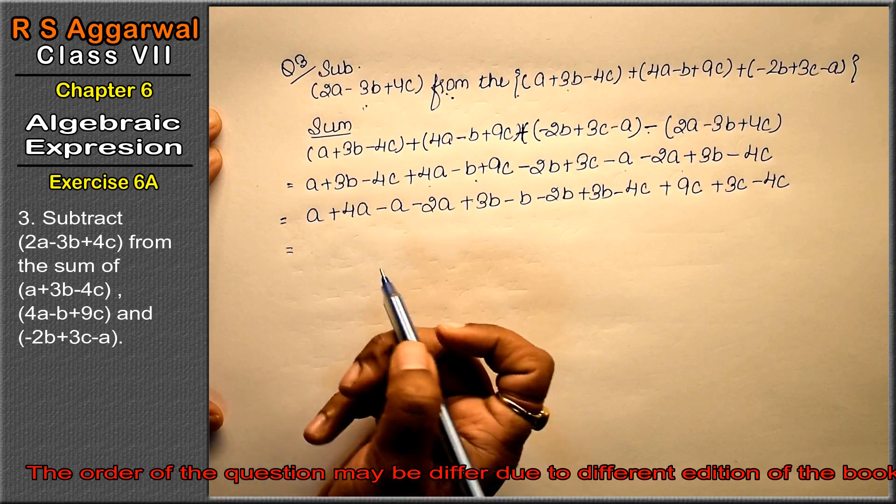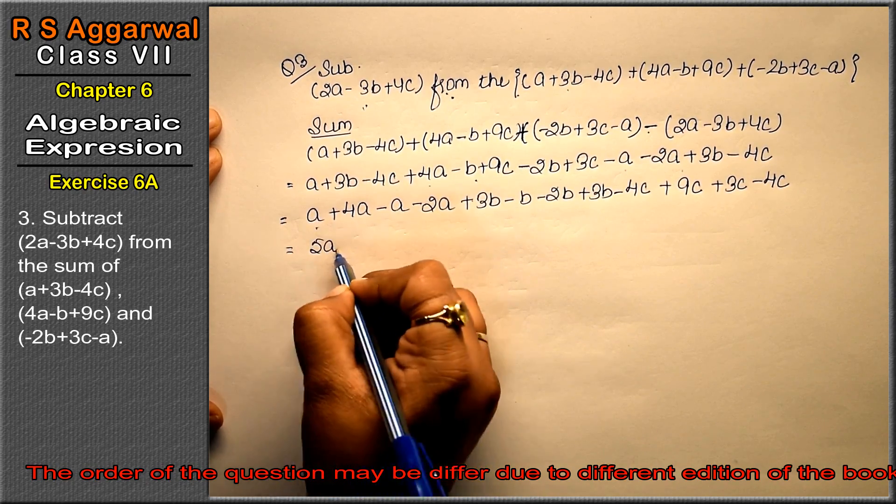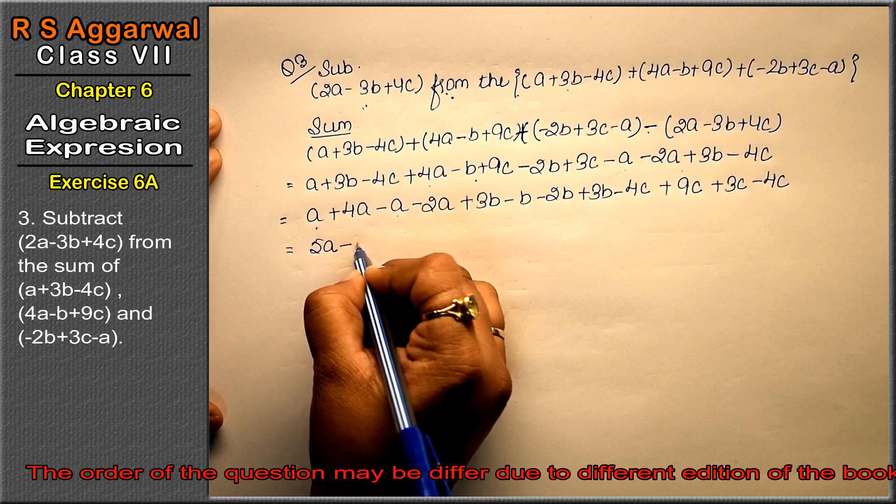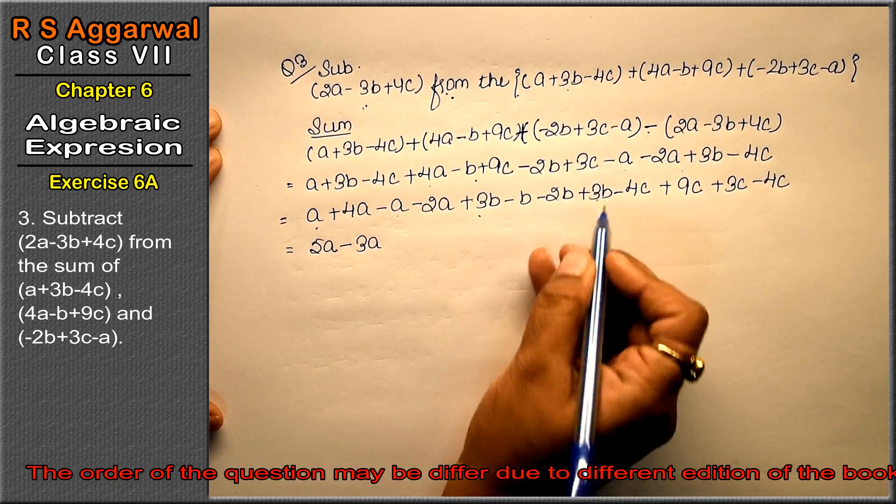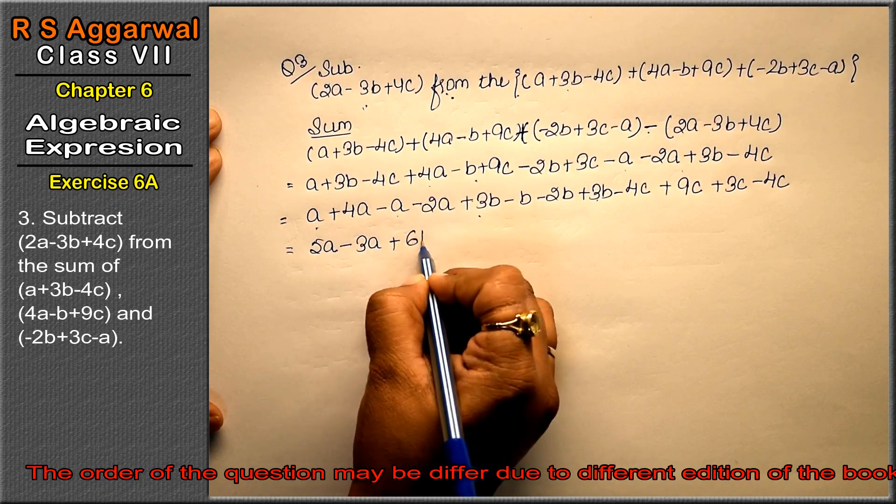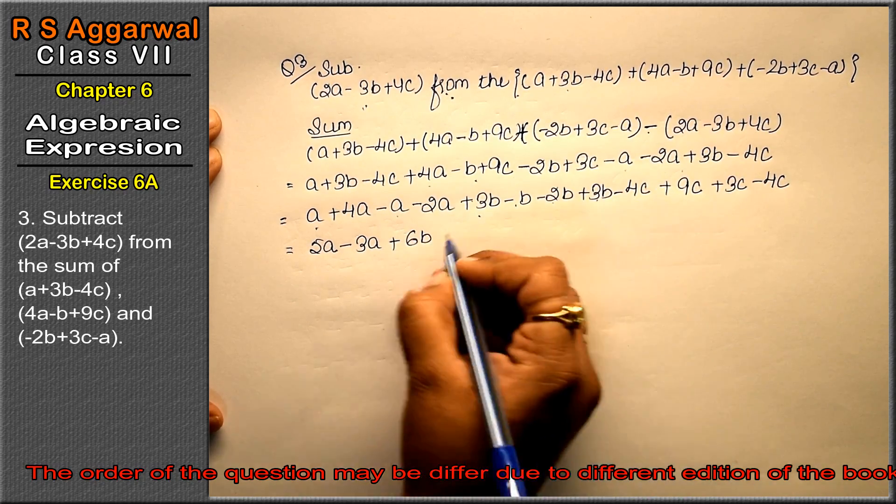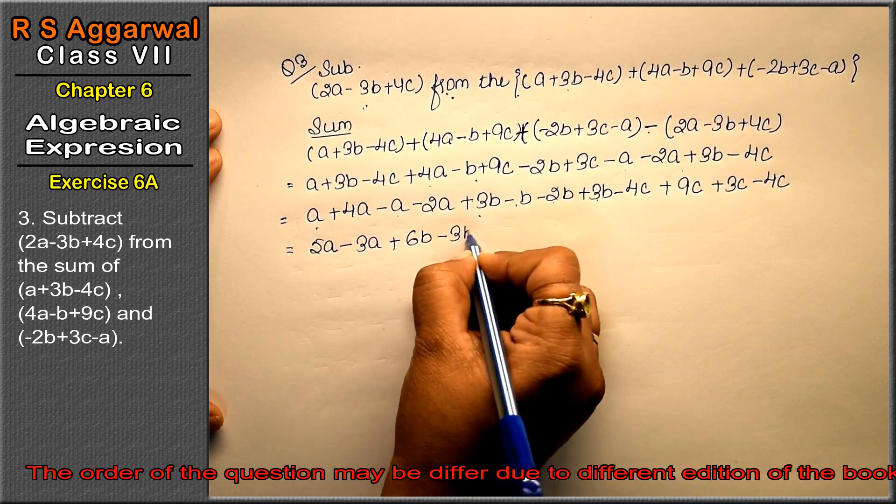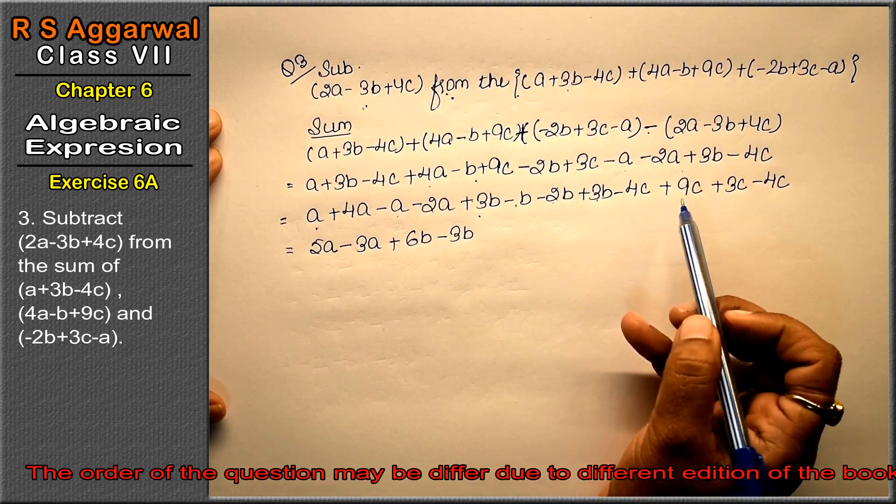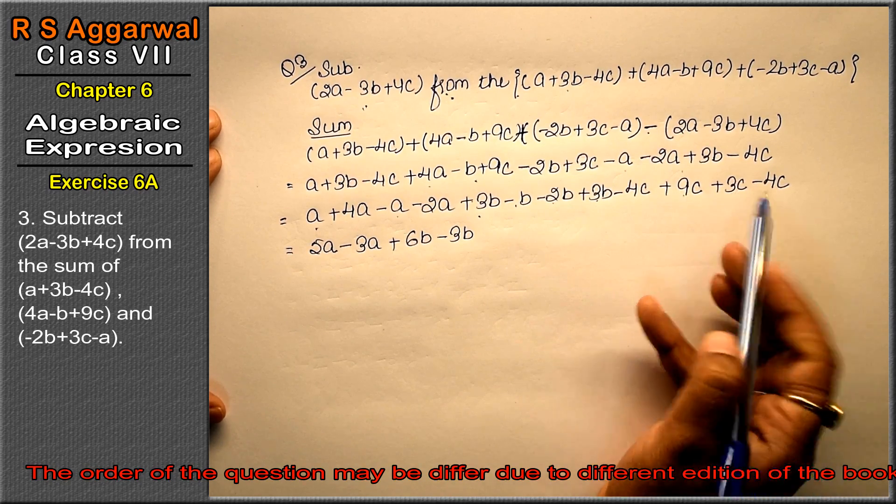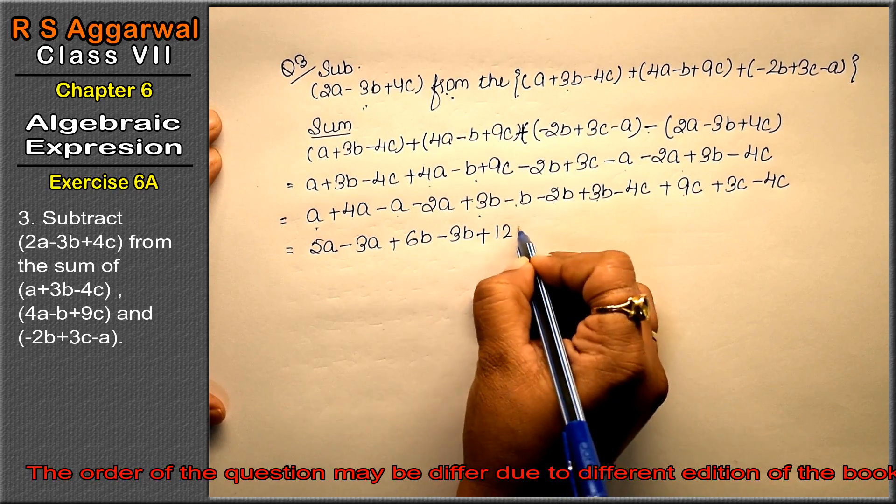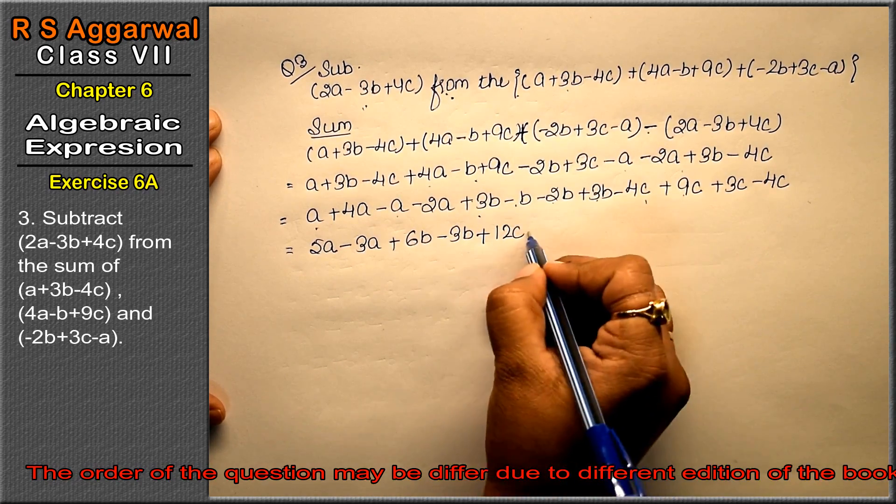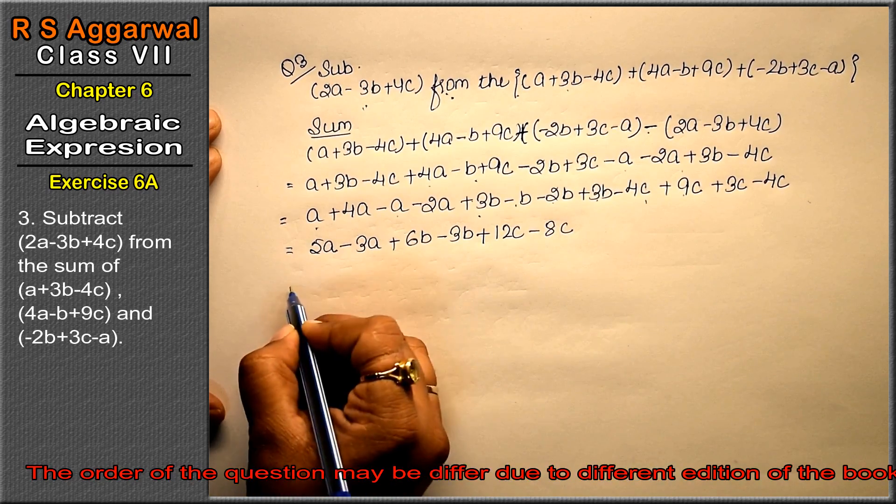Look, the positive a terms together: 5a. Both negatives make 2a, so 3a total. For b, look: the positive 3b plus 3b is 6b. The negative b minus 2b minus 3b makes minus 3b. Right friends? For c, look: the positive 9, 10, 11, 12c and the negative 4c minus 4c makes 8c. Look.